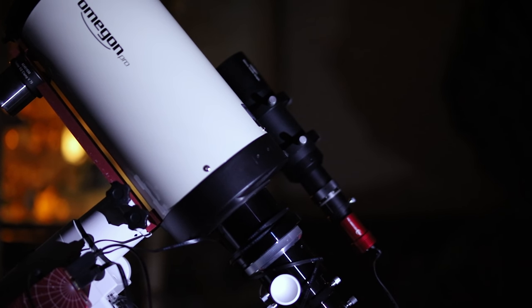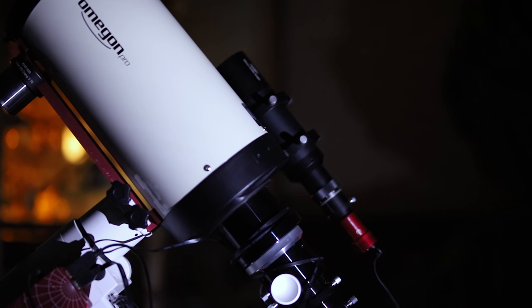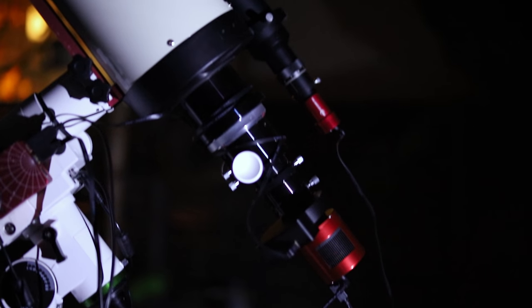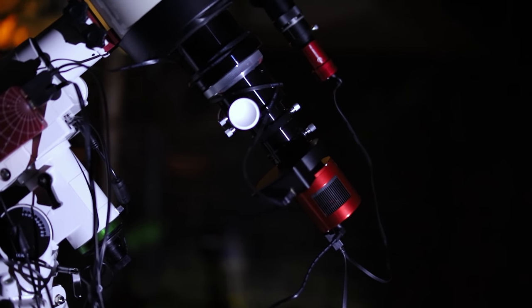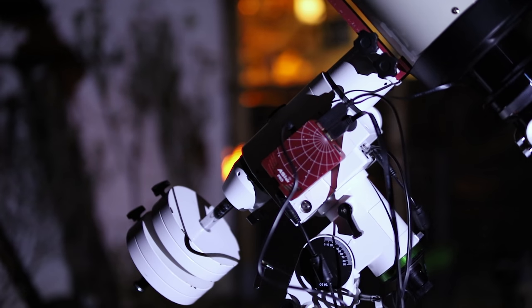I have the guidescope on the side, because off-axis guiding just doesn't work for me. In the back we have the ZWO camera and filter wheel. Everything is connected to the ASIAIR.